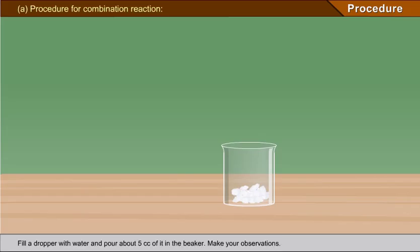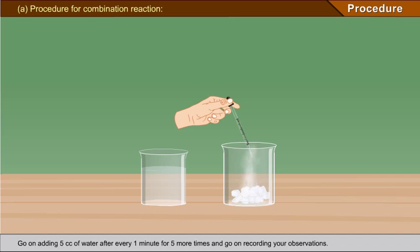Fill a dropper with water and pour about 5 cc of it in the beaker. Make your observations. Go on adding 5 cc of water after every 1 minute for 5 more times and go on recording your observations.